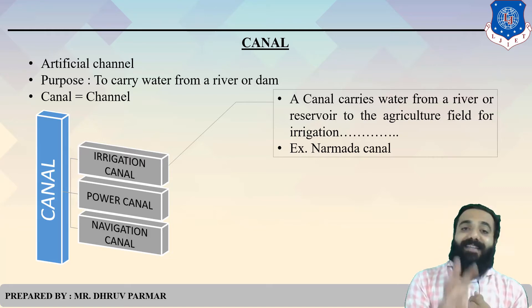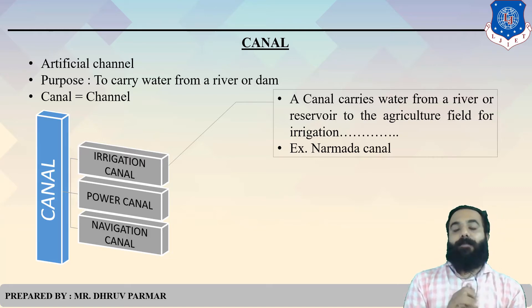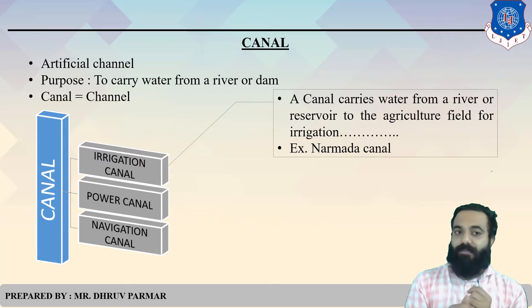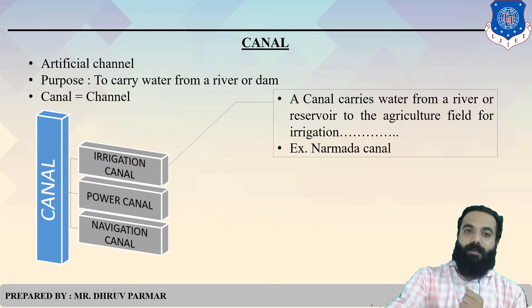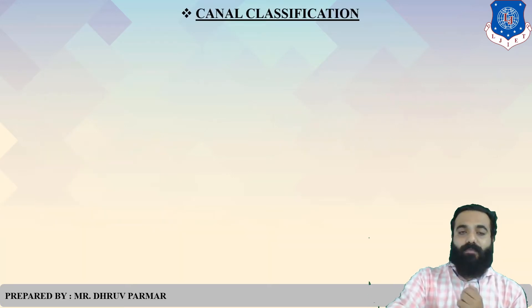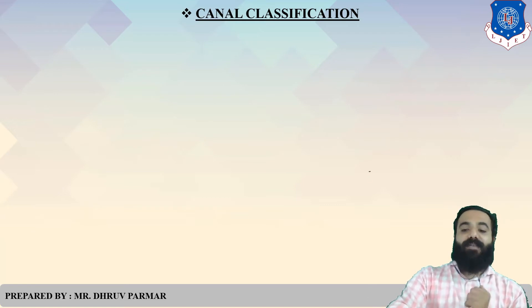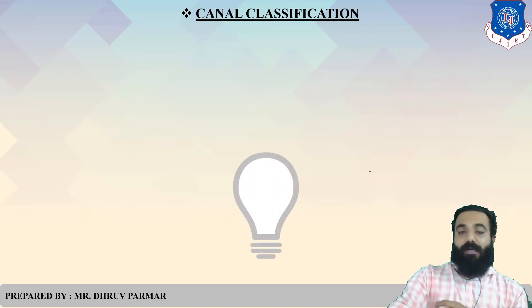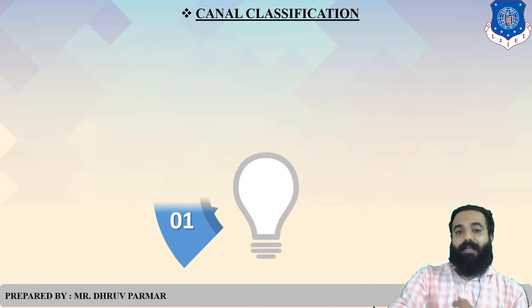So basically, there are three types of canal: Irrigation, Power, and Navigation. Next, we look at Canal Classification — how can you classify a canal?